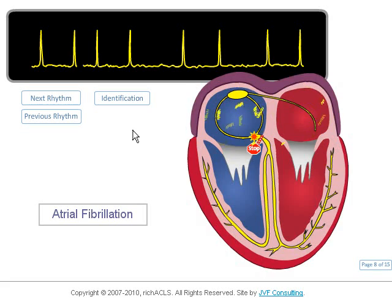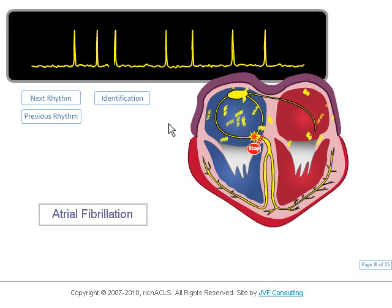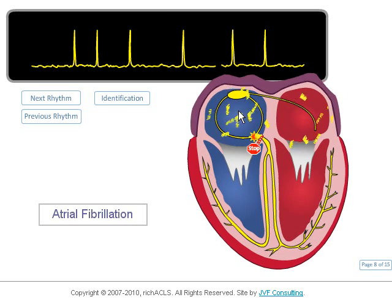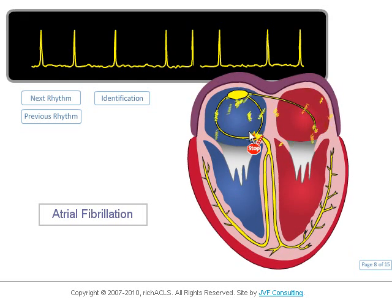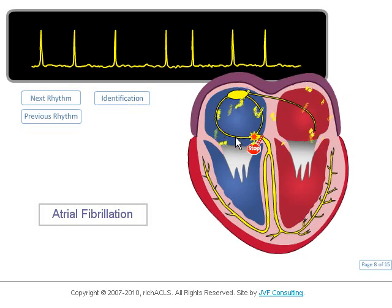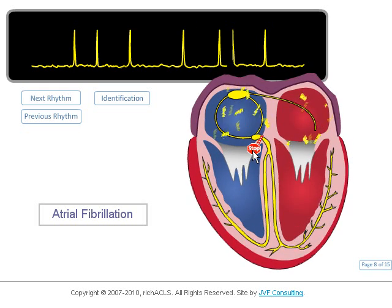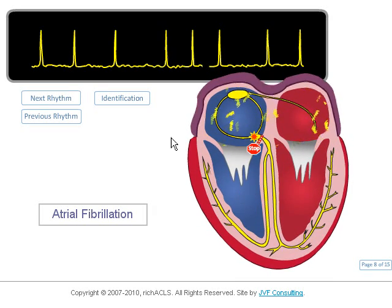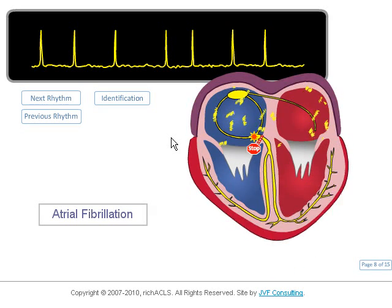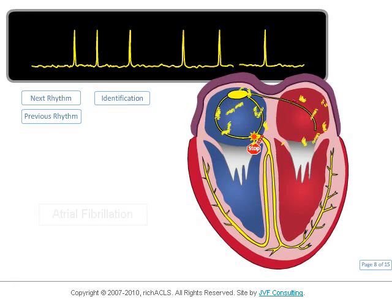When we look at the animation, we see the atriums quivering rather than contracting in a coordinated manner. This is because the atrial tissue has fibrillatory waves running in all directions. The AV node is bombarded with up to 300 impulses a minute, but acts as a stoplight, only allowing a small portion through. Two unique characteristics of this rhythm are irregular R-to-R intervals and a wavy baseline from fibrillatory waves.